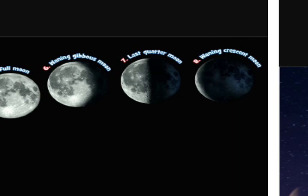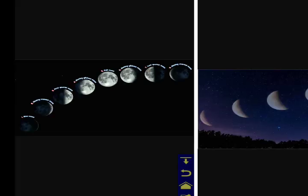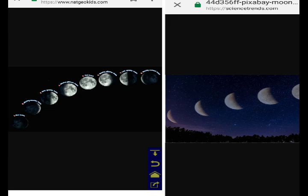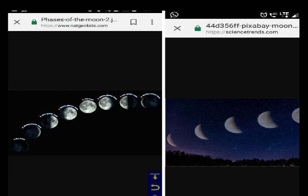Sixth one, waning gibbous moon. Seventh one, last quarter moon. Eighth one, waning crescent. This is the phases of moon and when all phases of moon went, the moon changes to one new full moon.